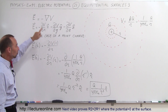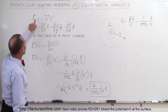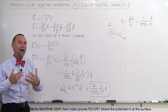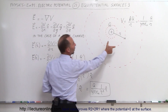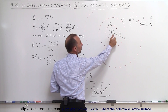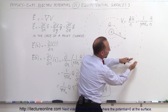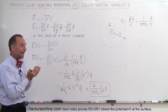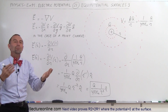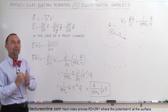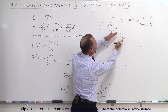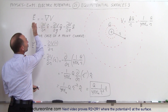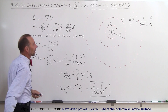This shows the relationship between the electric field and the rate of change of the potential. The electric field is a function of how fast the potential changes: if the potential changes quickly, the electric field is strong; if it changes slowly, the electric field is weak. The spacing of equipotential surfaces indicates the strength of the electric field — close together means strong, far apart means weak.